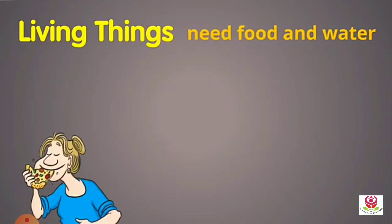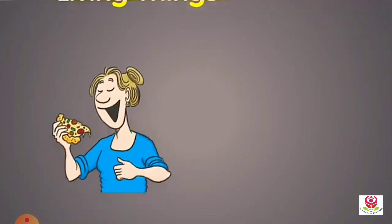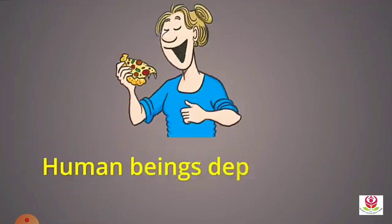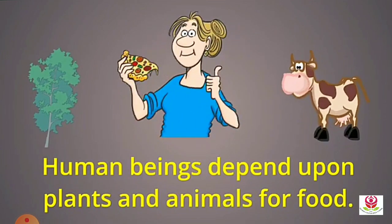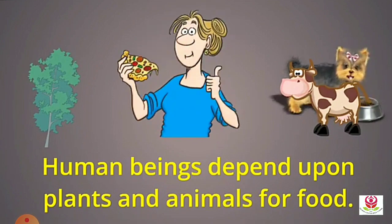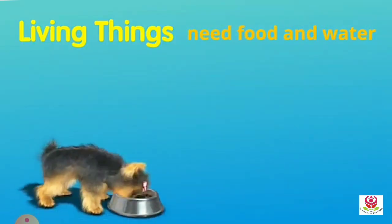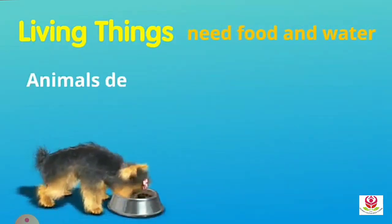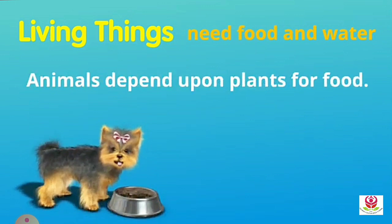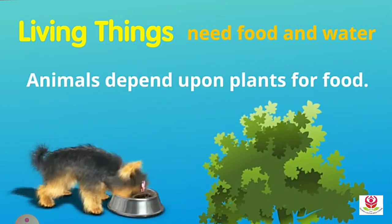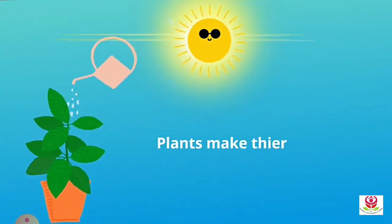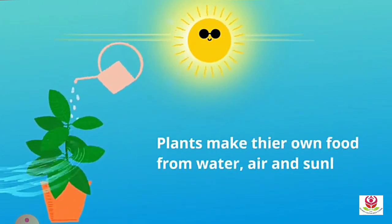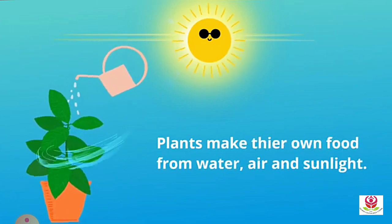Living things need food and water. We human beings depend upon animals and plants for food. Animals depend upon plants for their food. Plants make their own food from water, air, and sunlight.